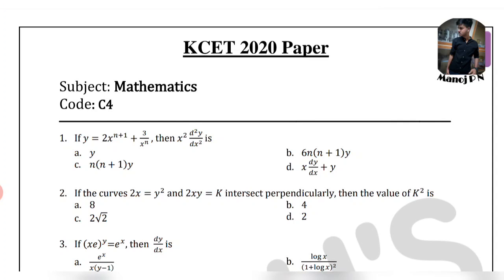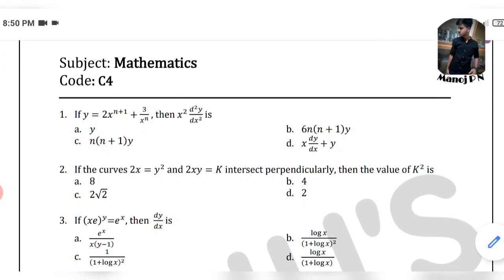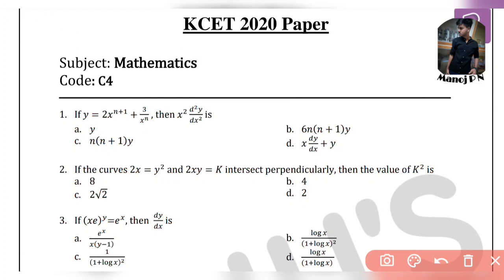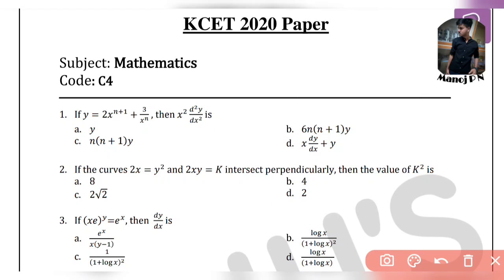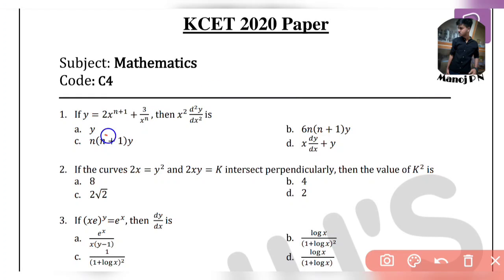Let me solve the first question. If y = 2·x^(n+1) + 3 / x^n, then find x² · d²y/dx². It's confusing. Here you would need to differentiate or double-differentiate, then substitute it and simplify it.